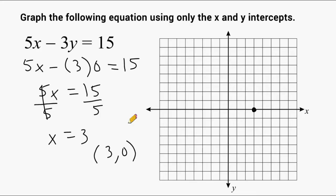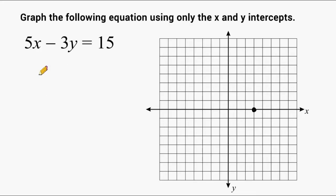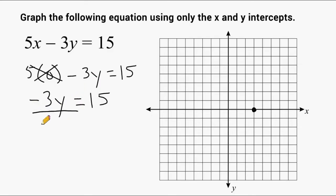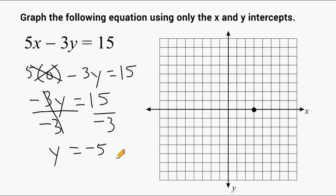Now let's figure out what our y-intercept is going to be. Because we know that the x-value is always equal to zero wherever your line crosses the y-axis, we substitute zero in for x and solve for y. 5 times zero is zero, so we can eliminate that term, which just leaves us with negative 3y equals 15. We divide both sides by negative 3 — negative 3 divided by negative 3 is positive 1 — and that leaves us with y equals negative 5. So the y-intercept coordinates are (0, negative 5), located 5 below the x-axis, right here.